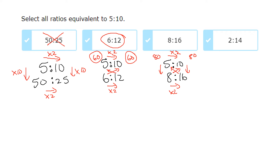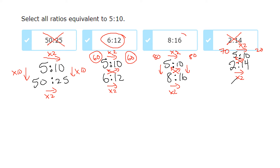For 2 to 14 and 5 to 10 — going left to right, that's times 2, but 2 times 2 does not give me 14, so this is not equivalent. Cross multiplying confirms: 2 times 10 is 20 but 5 times 14 is 70 — not equal, so not equivalent. That means only the second and third options are equivalent to 5 to 10.